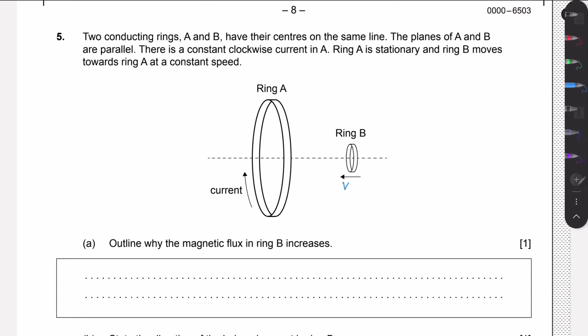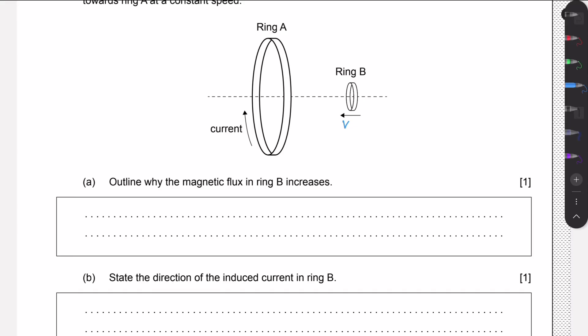We firstly need to outline why the magnetic flux in ring B increases. Well, since we have a current flowing in ring A, a moving current creates a magnetic field around it. And we know that the closer we are to this magnetic field, the stronger it becomes. So what we can say is that the magnetic field of A increases inside B as it gets closer, as the field lines will be more dense.